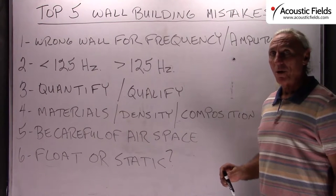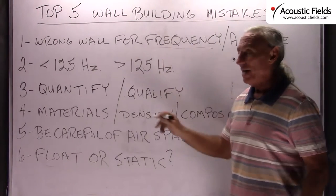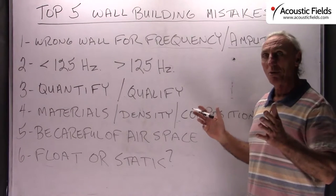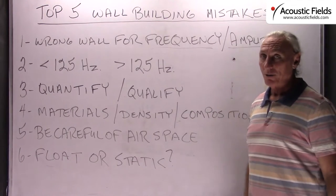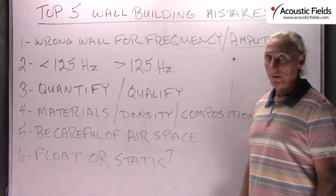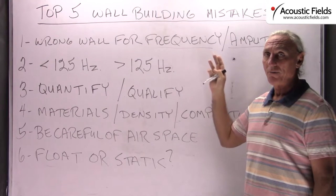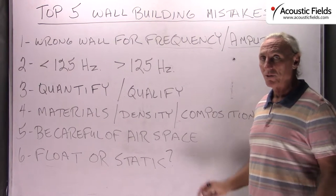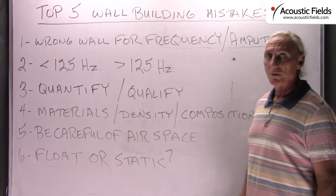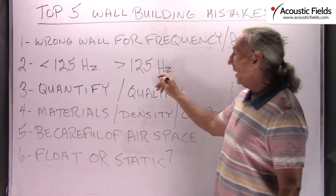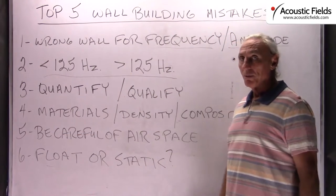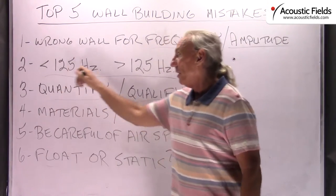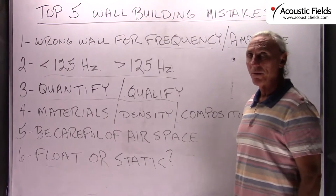The first mistake is the wrong wall for the wrong job. Each wall that you build when dealing with noise has to take frequency and amplitude into consideration. If you don't know what frequency the noise is at and you don't know how strong it is, you have no idea what wall to build. You have to quantify, do some measurements — some simple iPhone applications give you a really good handle on frequency and amplitude. The break point to consider is below 125 and above 125 cycles, because the barrier technology for below 125 and above 125 is completely different.